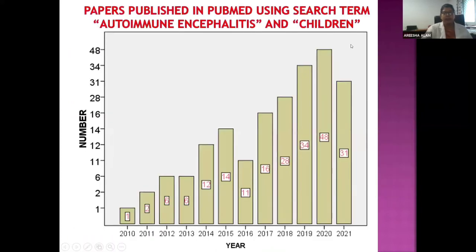A simple PubMed search for 'autoimmune encephalitis' and 'children' shows how new this entity is. Before 2010 there are no publications, and even until 2016 there were only about 10 publications per year globally. This entity was unrecognized 10 to 15 years ago, and there are no specific guidelines — only recommendations — available for treatment and diagnosis.